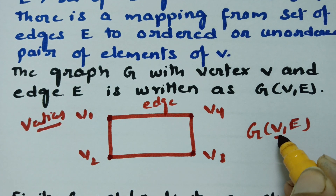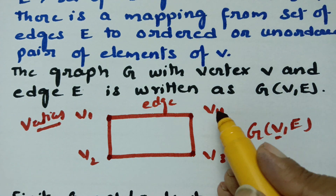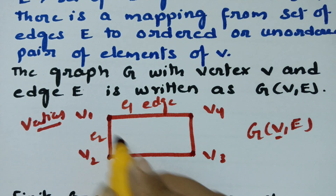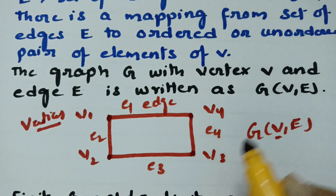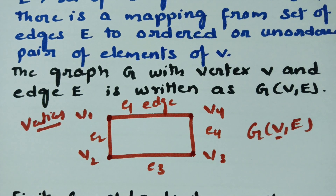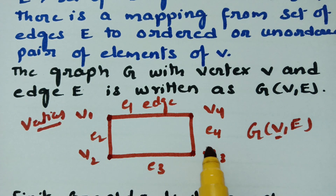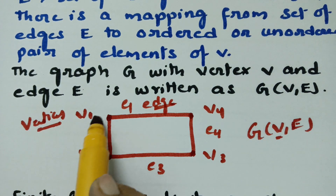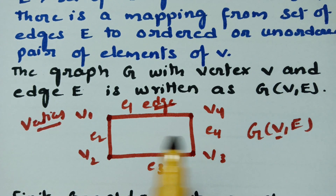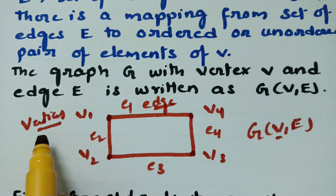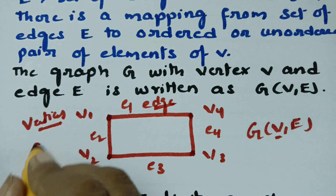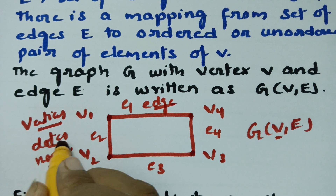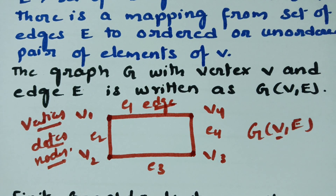The graph consists of vertices V1, V2, V3, V4 and edges E1, E2, E3, E4. The lines E1, E2, E3 are the edges, and V1, V2, V3, V4 are the vertices or dots or nodes. This is the representation of a graph.